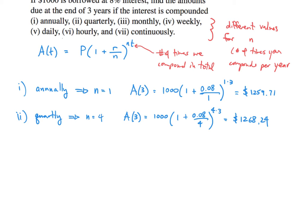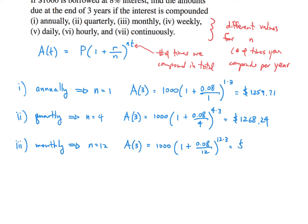The next one is monthly. Monthly means n is equal to 12 because there are 12 months in a year. So after three years, we're going to have 1,000 times 1 plus 0.08 divided by 12, all raised to the 12 times 3 power. When you do that, you get $1,270.24 rounded to the nearest penny.